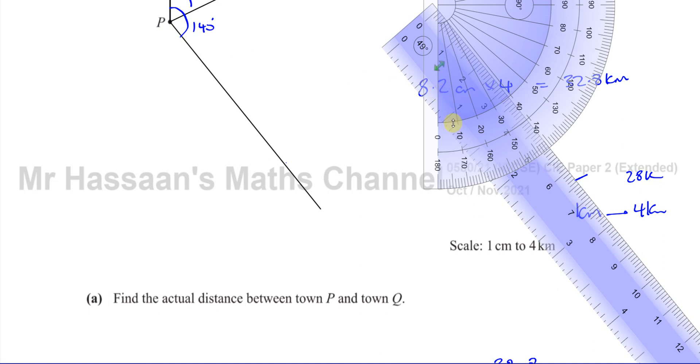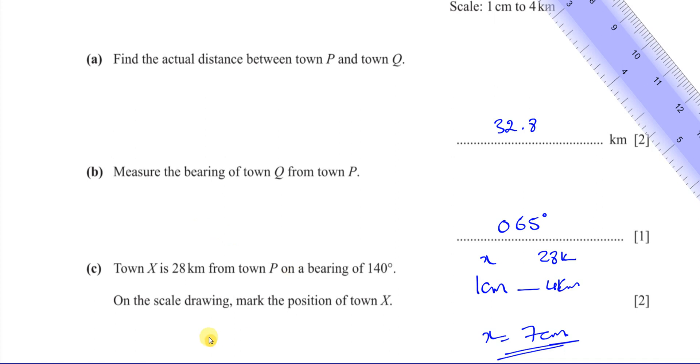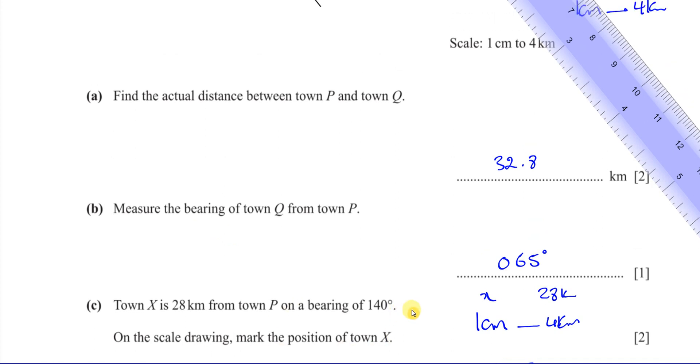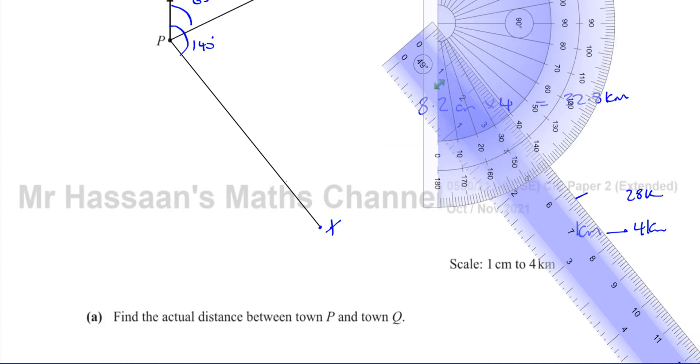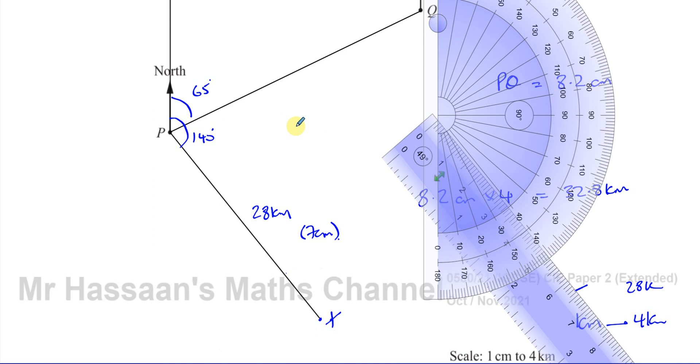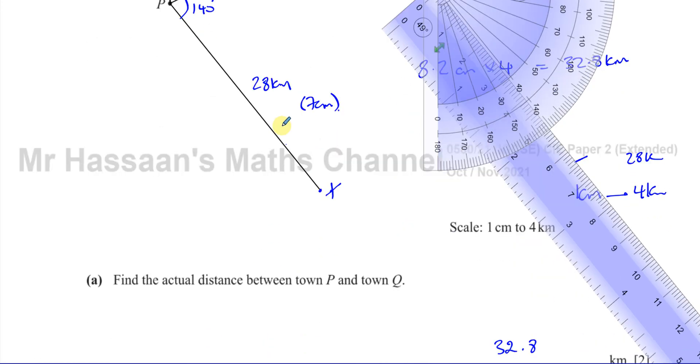So we measured seven centimeters along the line. If you want to just use a protractor, measure seven centimeters, make an arc there and mark that point. That's probably even better. So on the scale drawing, mark the position of town X. So I'm going to put here X. Okay, this is the point X. This is the position of X. I'll do it like this. That point is X. All right. And we know that this is 28 kilometers or seven centimeters on our scale drawing. So that answers question number six.